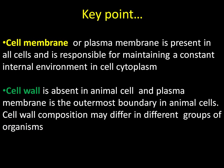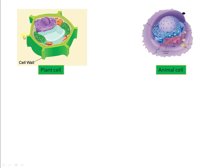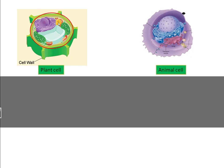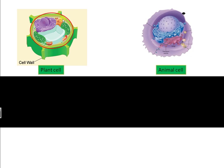Cell wall composition may differ in different groups of organisms. We'll be discussing the differences in detail in the coming slides. This is a structure of a plant cell, and this is a plant cell wall. Plant cell wall forms the outermost boundary in the case of plant cells, and inner to the cell wall is a plasma membrane.